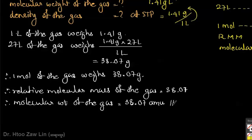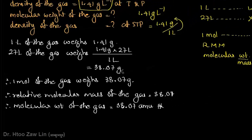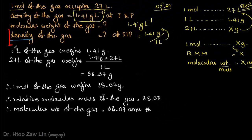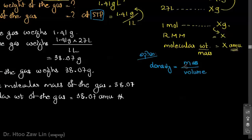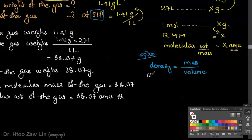The next step is density at STP. At STP, the volume of one mole of gas is 22.4 dm³.